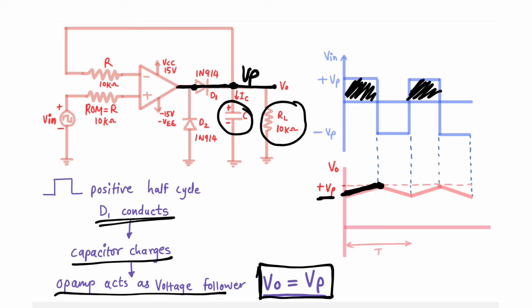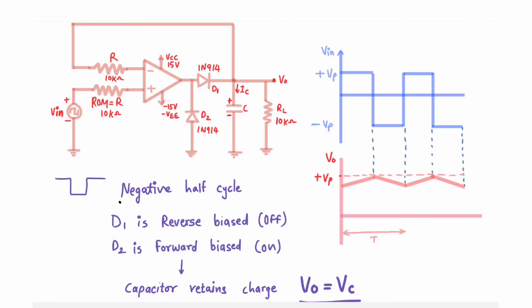So in the positive cycle, the capacitor charges with Vp voltage and that Vp voltage is passed to the output. In every positive cycle, D1 gets forward biased and the capacitor charges with the maximum peak voltage. Now in the negative half cycle, D1 will be reverse biased because at the capacitor's node there is already Vp voltage — high potential. At the positive terminal of D1 there is a negative voltage, so D1 is reverse biased and this path is open circuit.